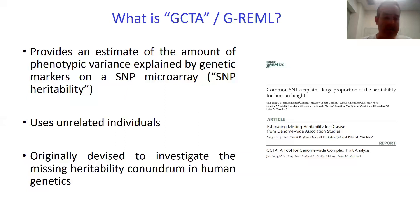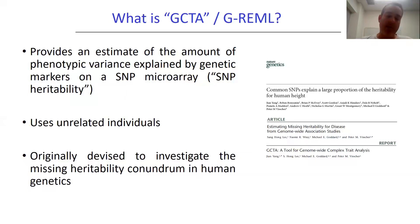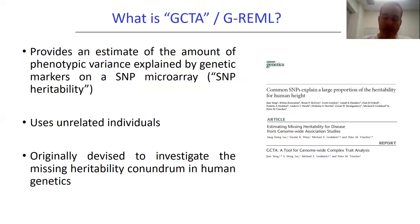Spoiler alert — it basically turns out that a lot of that missing heritability is actually in the form of variants of very small effect, too small to be seen at genome-wide levels of significance in GWAS studies, scattered across the genome — thousands, tens of thousands, hundreds of thousands of these variants of small effect. You can read more about GCTA and GREML approaches in a series of papers by Jian Yang, Peter Visscher, and colleagues dating from 2010, listed on the right-hand side of the slide.